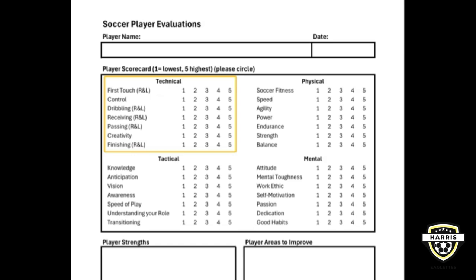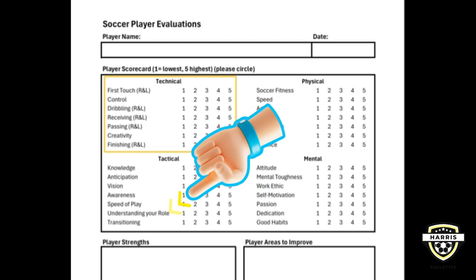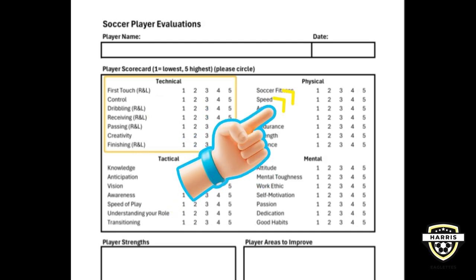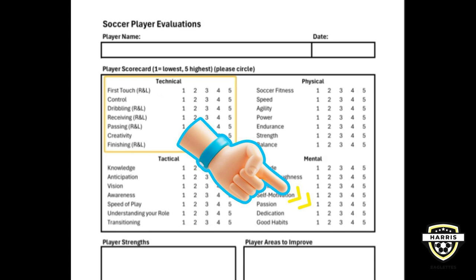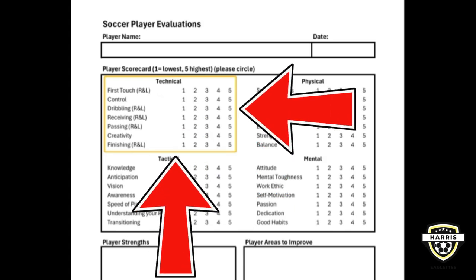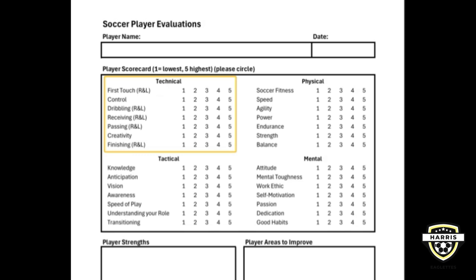In this video we're going to talk about soccer player evaluations. When it comes to developing soccer players, there are really four areas that are developed by coaches: first being technical, then the tactical side of things, the physical attributes, as well as the mental. Technical skills are things like first touch, ball control, dribbling, and all the pieces unique to that soccer experience.